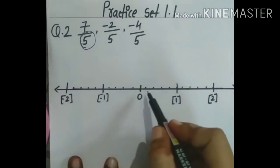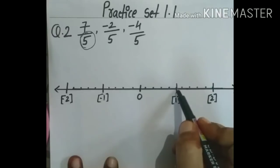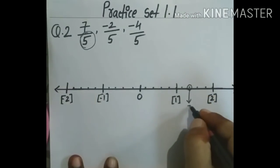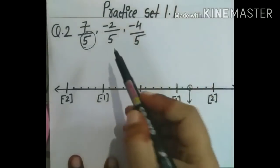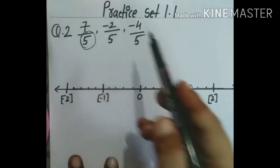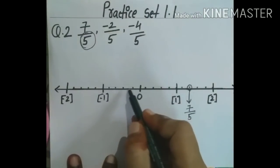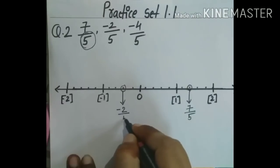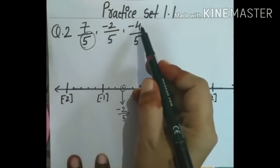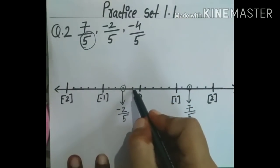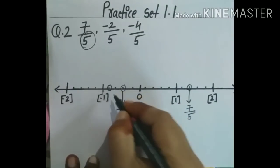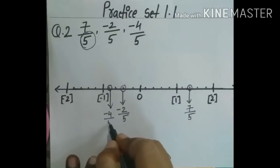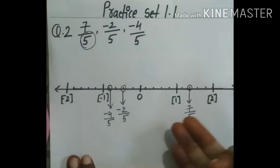First rational number is 7 upon 5 — start from 0 and count: 1, 2, 3, 4, 5, 6, 7. Here is 7 upon 5. Next, minus 2 upon 5 — negative, so go left of 0: count 1, 2. Here is minus 2 upon 5. Next, minus 4 upon 5 — start from 0 going left: 1, 2, 3, 4. This is minus 4 upon 5. This way we represent rational numbers on a number line.